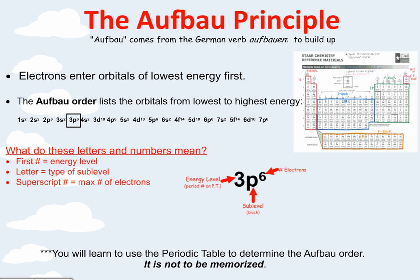So the Aufbau principle, it comes from the German verb Aufbauen, which means to build up. So what does that mean exactly? The rule is that electrons enter orbitals of lowest energy first. Well, if we look at the periodic table, the lowest energy is right here, one. The Aufbau order lists the orbitals from lowest to highest energy. So I know this looks like a mess to you right now, but we're going to learn to use our periodic table to get this order. You don't have to memorize that. It's too ugly.